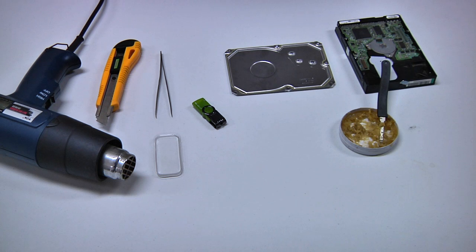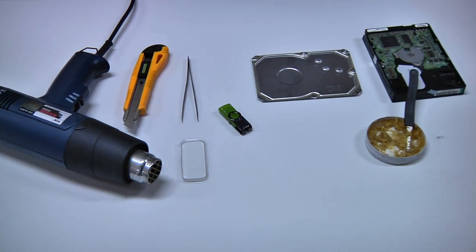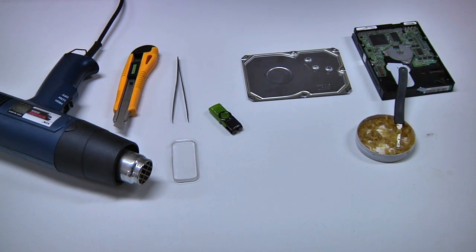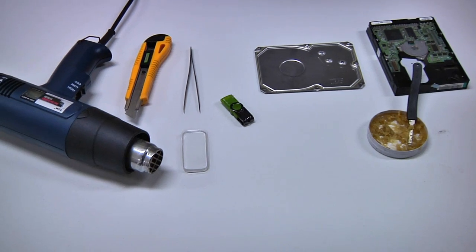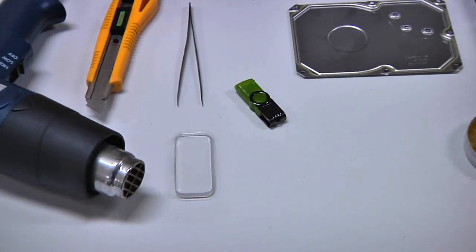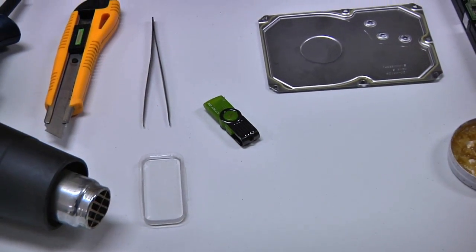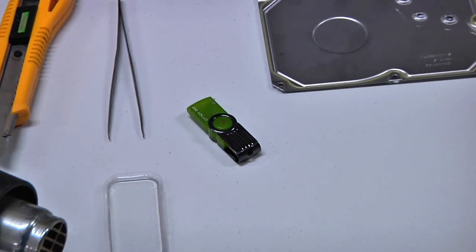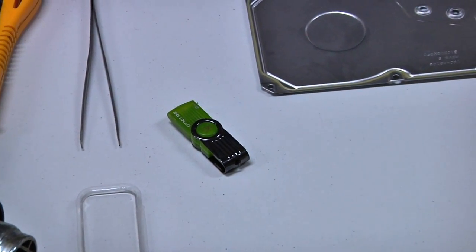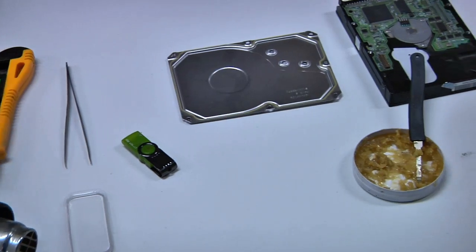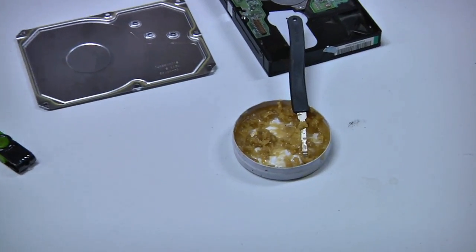So from left to right, we have the hot gun, the blade, and the tweezer. After the tweezer we have alcohol, which is used to clean the flash chip later. We also have a hard drive, used to have something pressed on the flash chip when we do the heating, and the flux used to help do the desoldering.